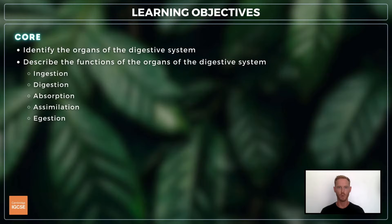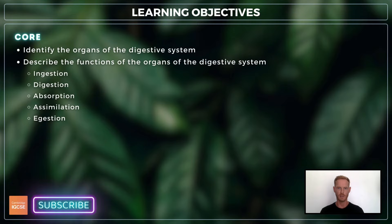For topic 7.2, you need to identify the organs of the digestive system and describe their functions in relation to ingestion, digestion, absorption, assimilation and egestion. There's no extended supplement for this lesson.